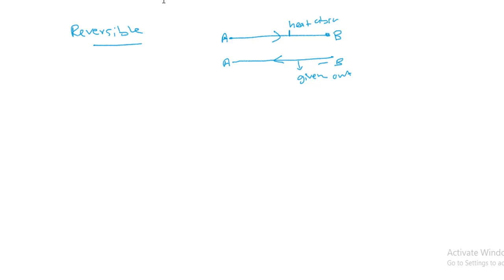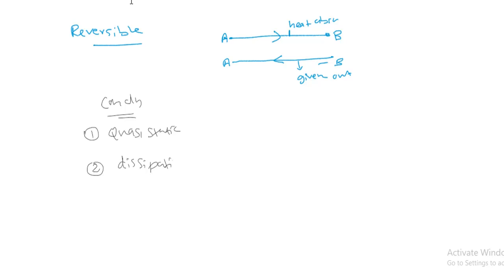For a process to be reversible, two conditions must be satisfied: first, the process should be quasi-static; second, there should be no dissipative forces present. Examples of dissipative forces include viscous forces, friction, and electrical resistance. If these conditions are satisfied, the process can be reversible.